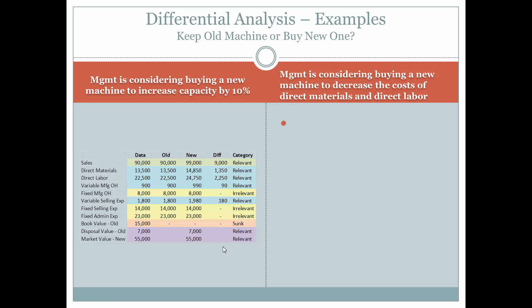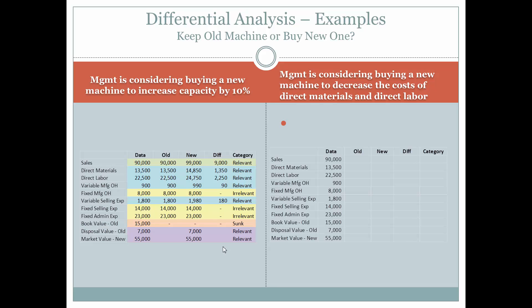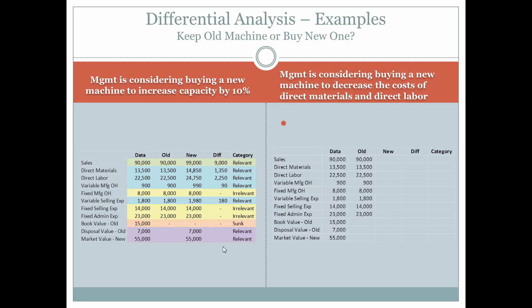Now let's look at another scenario. Management is considering buying a new machine to decrease the cost of direct materials and direct labor. There is no change in the amount they are going to produce or sell — the change will be the decrease in cost of direct materials and direct labor. We have the same data and components associated with the old machine. Let's look at what will change with respect to the new machine.